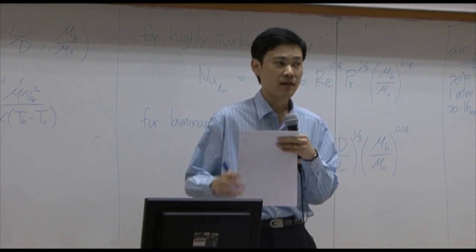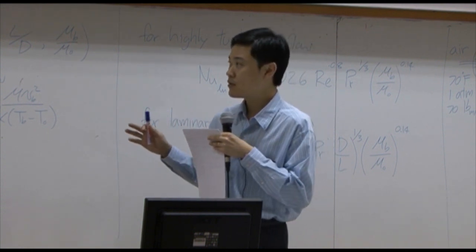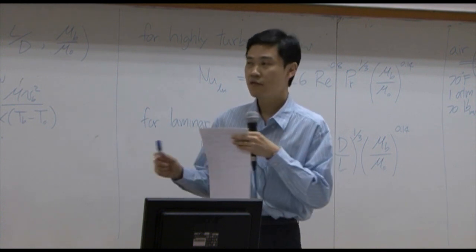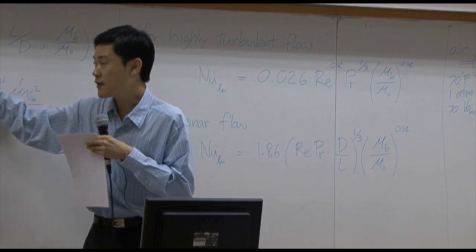Normally, each kind of Nusselt number would be a function of several dimensionless numbers. For example, it would be a function of Reynolds number.